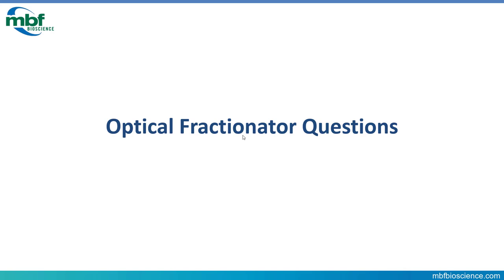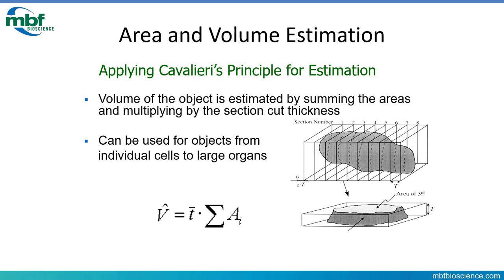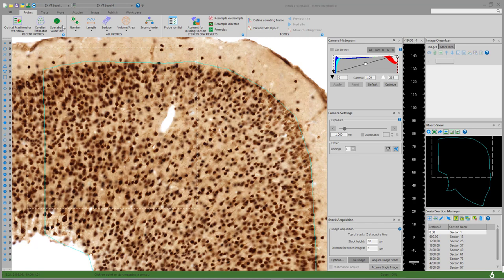The Cavalieri probe is a way to measure the area — or most often volume — of your entire region of interest. Whereas the optical fractionator counts the total number of cells, the Cavalieri probe answers: how large is my region of interest? If you've got your whole region of interest sectioned into individual sections, you can calculate the total volume by summing the cross-sectional areas of each section and multiplying by the average section thickness. That's the simple explanation for the Cavalieri estimator. We're back looking at the contour and data file we used for the optical fractionator to demonstrate this.